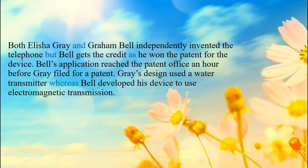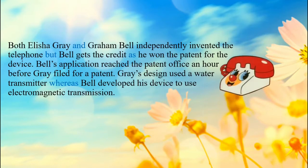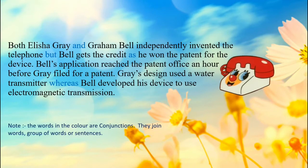Both Elisha Gray and Graham Bell independently invented the telephone. But Bell gets the credit as he won the patent for the device. Bell's application reached the patent office an hour before Gray filed for a patent. Gray's design used a water transmitter whereas Bell developed his device to use electromagnetic transmission. Please note that the words in color are conjunctions. Why? Because they join words, group of words, or sentences.